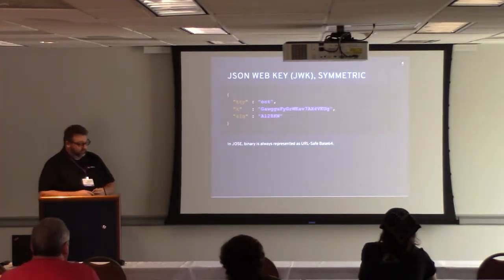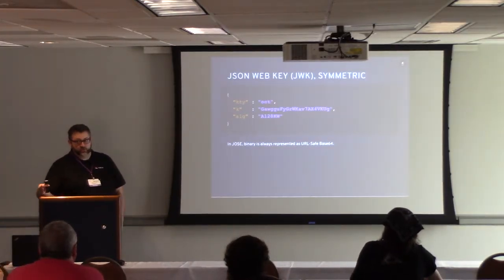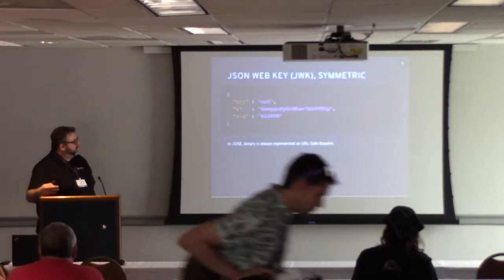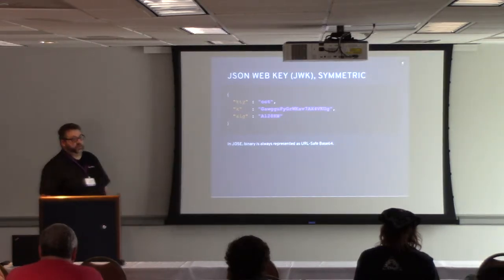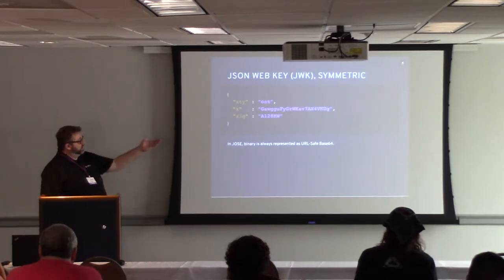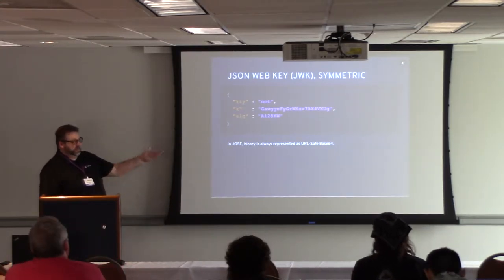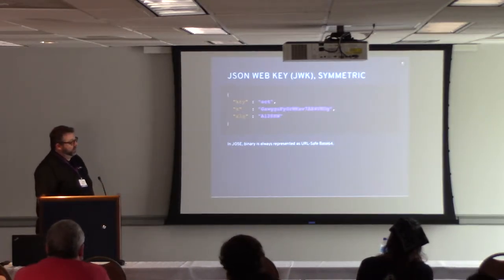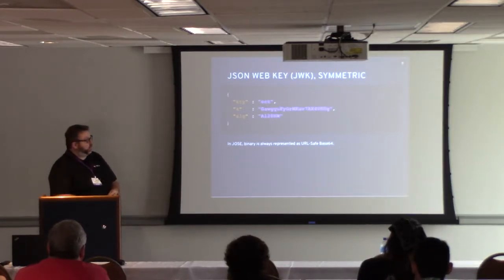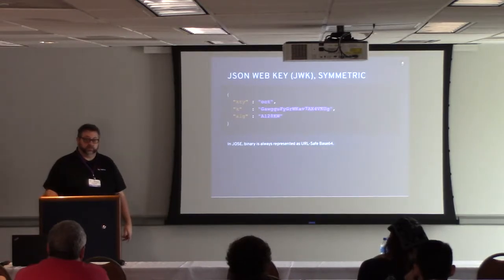We're going to start off with a really simple example: a symmetric key. We call these JSON Web Keys, or JWK for short. A JSON Web Key, when it's a symmetric key, has at the top the KTY parameter, which specifies what type of key this is — in this case, octets. We should expect a K parameter containing the actual octets of the key, base64 URL encoded. We also have an optional algorithm parameter, which indicates what algorithm this key can be used with.